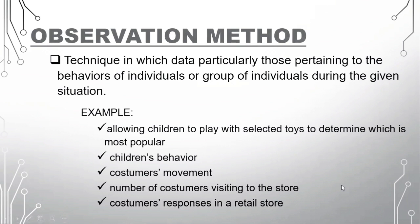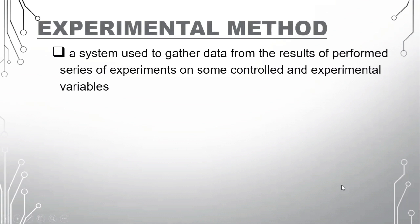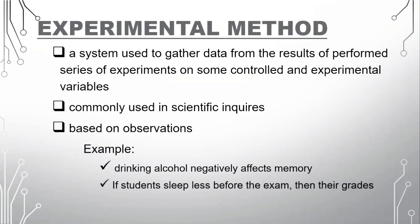And lastly, we have the experimental method. A system used to gather data from the results of performed series of experiments on some controlled and experimental variables. This is commonly used in scientific inquiries and is based on observations. Examples: drinking alcohol negatively affects memory, and if students sleep less before the exam, then their grades on the exam will be lower. So these examples are done by experimenting and observing.